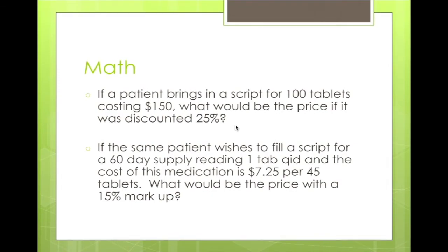Try these on your own, then come back. If a patient brings a script in for 100 tablets costing $150, what would be the price if it was discounted 25%? Because we see 'discounted,' we know it's a subtraction. $150 is 100%; 25% gives $150 times 25 divided by 100 equals $37.50. That's the discount, so $150 minus $37.50 equals $112.50.